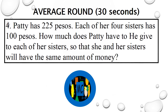Question 4. Patty has 225 pesos. Each of her four sisters has 100 pesos. How much does Patty have to give to each of her sisters so that she and her sisters will have the same amount of money? Go! Question 4. Patty has 225 pesos. Each of her four sisters has 100 pesos. How much does Patty have to give to each of her sisters so that she and her sisters will have the same amount of money? Go!